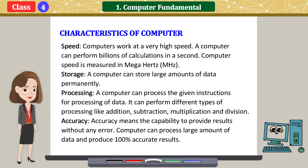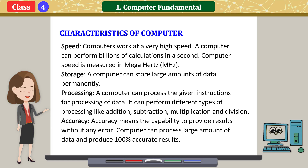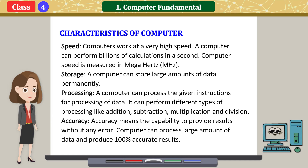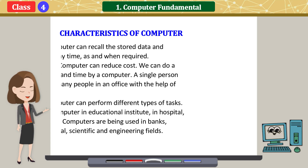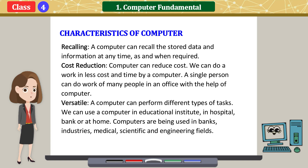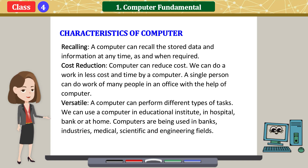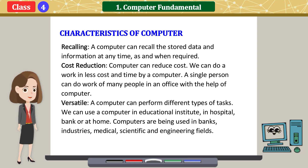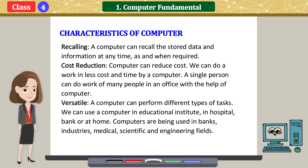Accuracy means the capability to provide results without any error. A computer can process large amounts of data and produce 100% accurate results. Recalling: a computer can recall the stored data and information at any time, as and when required. Cost reduction: a computer can reduce cost. We can do work in less cost and time by a computer.